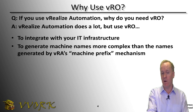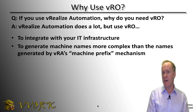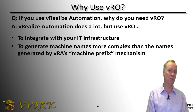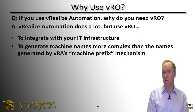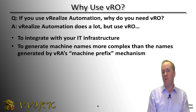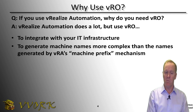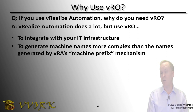Another reason to use VRO if you're a VRA customer: VRA has a mechanism built into it called a machine prefix, which is used to generate machine names and hostnames that are compliant with your corporate naming scheme. That's fine to use if your machine naming scheme is fairly simple, but the more complex your naming scheme gets, the harder it gets to use vRealize Automation's machine prefix mechanism.